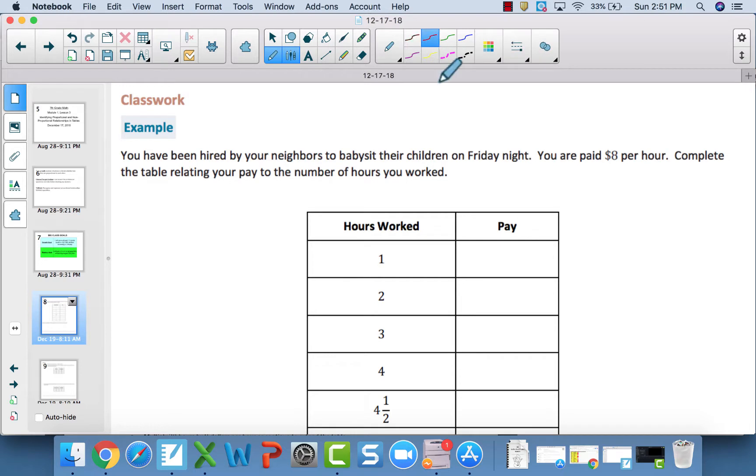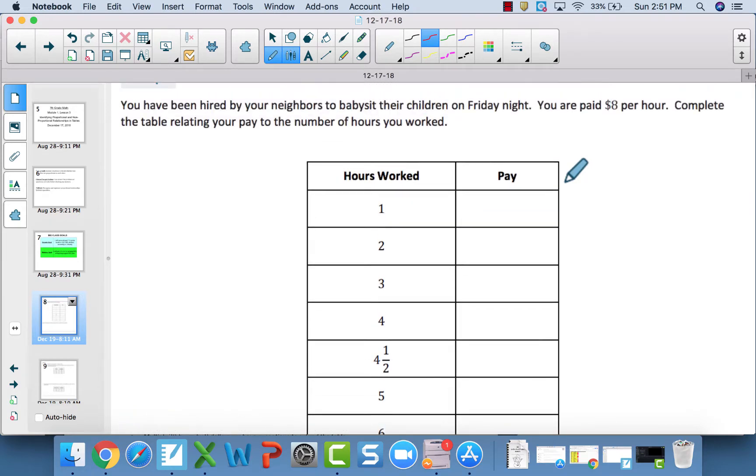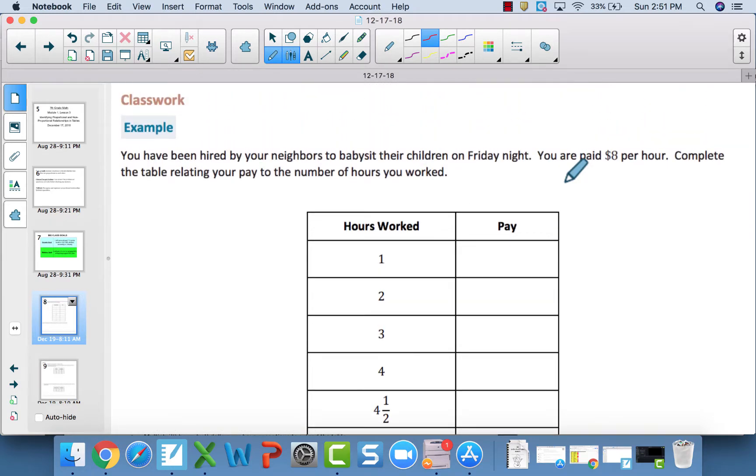Example number one. If you want to read through this and answer this on your own, you have the skills to do it. You have been hired by your neighbors to babysit their children on Friday night. You are paid $8 per hour.